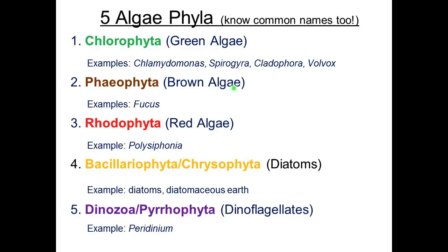Number two, Phaeophyta, which is the brown algae — we have an example in lab called Fucus. Three, Rhodophyta is red algae; an example would be Polysiphonia. Four, Bacillariophyta, or Chrysophyta, are the diatoms. And five, Dinozoa, or Pyrrophyta, are the dinoflagellates; the example we have is Pyridinium.